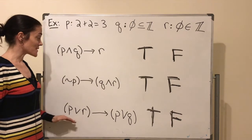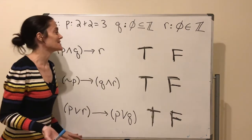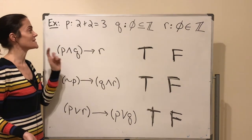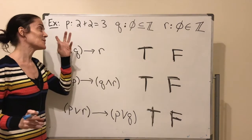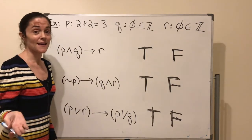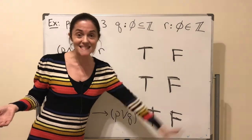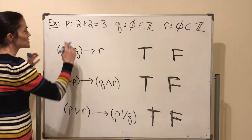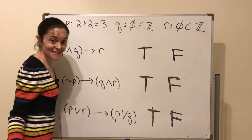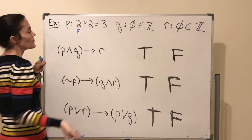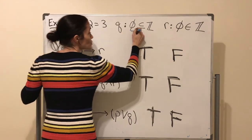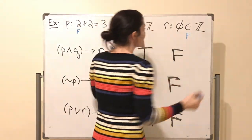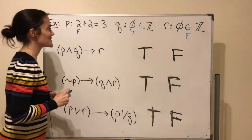We'll end with three examples. Throughout: p is '2 + 2 = 3' (false), q is 'ø ⊆ ℤ' (true — the empty set is a subset of every set), and r is 'ø ∈ ℤ' (false — the empty set is not an element of the integers).